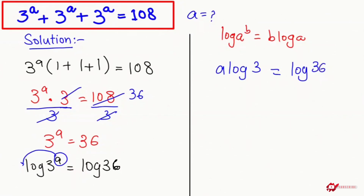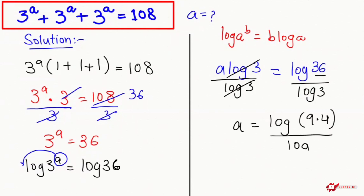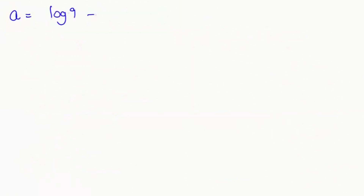Now here log of 3 is multiplying, so it will be divided to the other side. This and this get cancelled, so a is equal to log of 36 over log of 3. Now I'm going to write log of 36 as log of 9 times 4 over log of 3. Then applying the logarithmic rule that log of a times b equals log of a plus log of b, we get a equals log of 9 plus log of 4, all over log of 3.